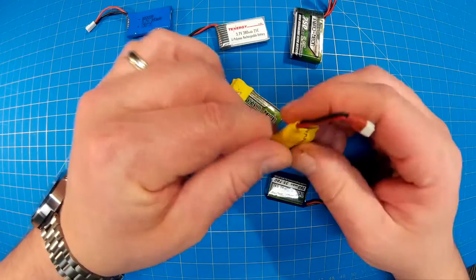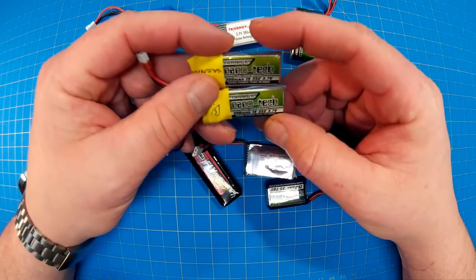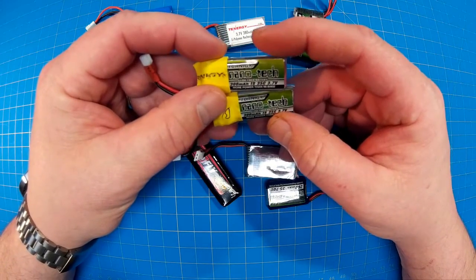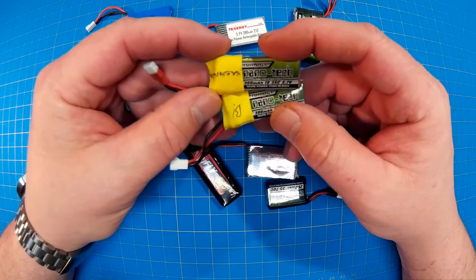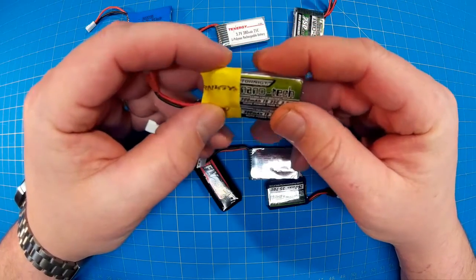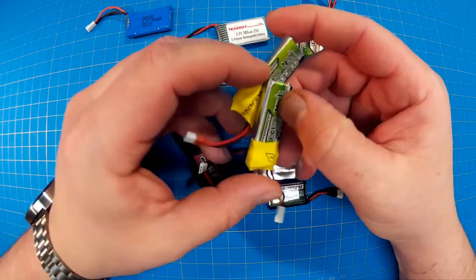So that doesn't really compute. Now you compound the fact that these Nanotechs run about 4 bucks a piece and then you pay shipping on top of that. They no longer work. So I probably got maybe 8 or 12 flights off of these before they started giving me fits.